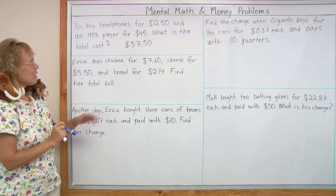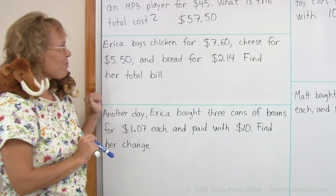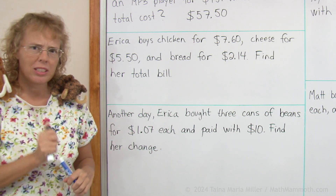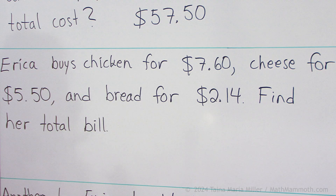How about this one? This is more challenging. Can we use mental math in this one too? Erica buys chicken for $7.60, cheese for $5.50, and bread for $2.14. Find her total bill.